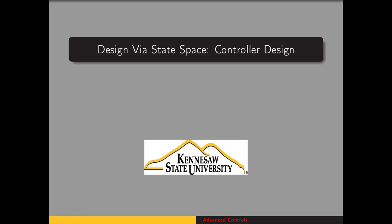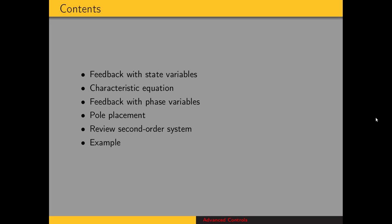We're going to examine designing a controller using state space methods. When designing a PID controller, for example, this effectively places the poles of the system. We're going to look at how to place poles of a system using state space methods. In this presentation, we'll go over feedback with state variables, the characteristic equation for systems with state space representation, feedback with phase variables, which are a special type of state variables, the pole placement method, and a review of the general second order system.